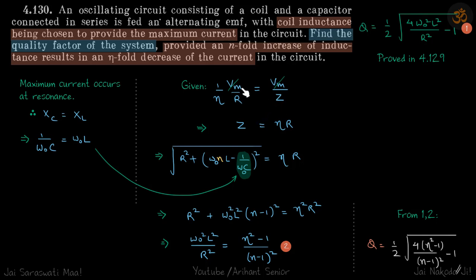From here we see Z is equal to eta R, and Z is R square plus—we know this is xl minus xc. So xl will now be omega_0 into n l, and the capacitance remains the